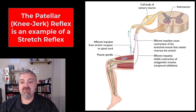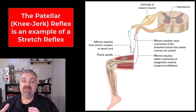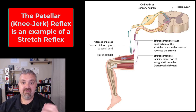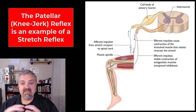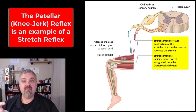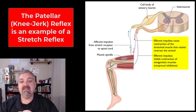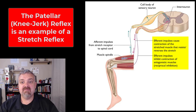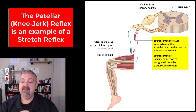Here we see a stretch reflex — the patellar reflex. A stretch reflex's job is to regulate muscle length. If you strike that patellar tendon and quickly stretch that muscle, the sensory information will be sent to the spinal cord, information will be processed, and the response is going to be contraction of the knee extensors and inhibition or relaxation of the antagonist muscles, the hamstrings, leading to that kick to regulate the muscle length.